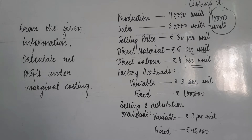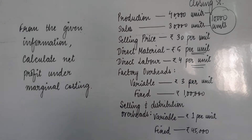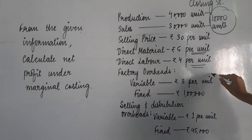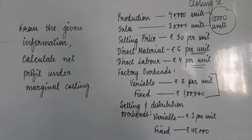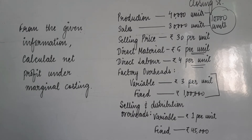Now they have given the next expense as factory overheads. Factory overheads have been given in two categories. One is variable and one is fixed. Variable is ₹3 per unit and fixed is ₹1 lakh. Fixed means it will be the same regardless of units produced.